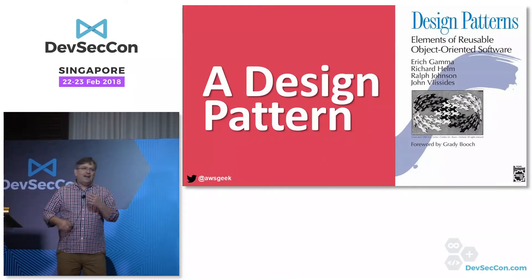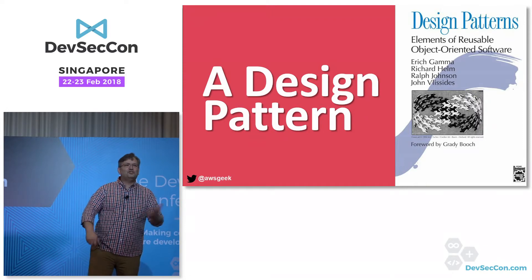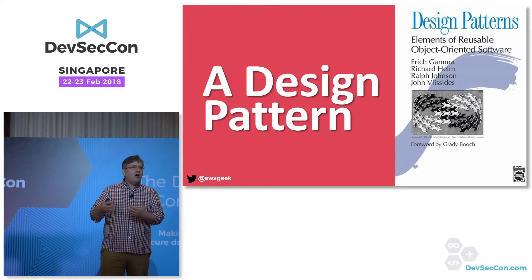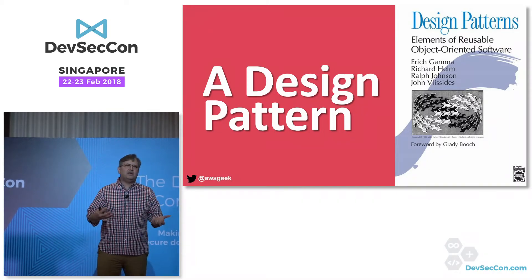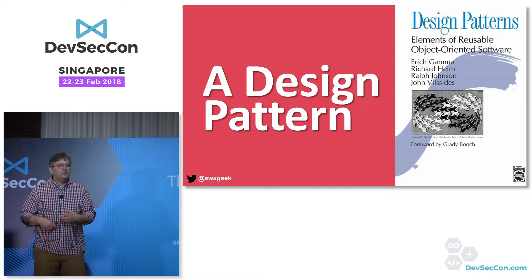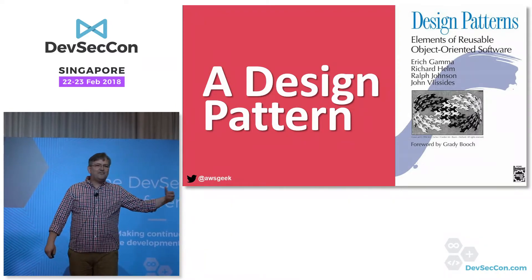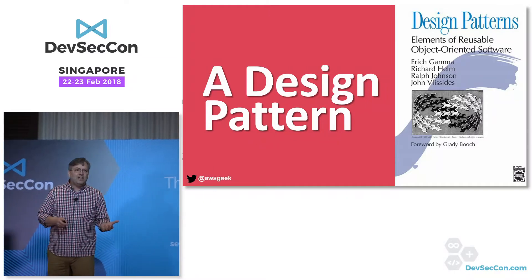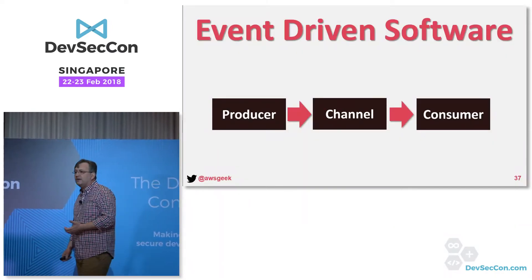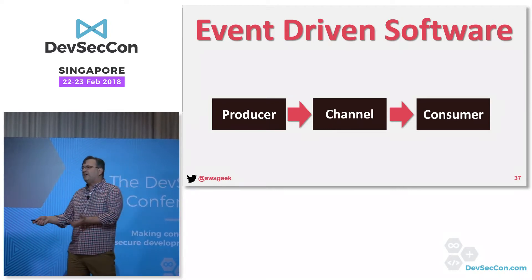How many of you remember the Gang of Four and design patterns? Mid-90s. Design patterns in software development are a way for us to amortize the cost of certain activities or code — they allow us to speak a similar language when talking about specific problems. So if I talk to somebody about a visitor pattern or a facade pattern, if they're familiar with the Gang of Four book, we can talk the same language. Today I'm going to introduce a simple design pattern — event-driven software — in the context of security and adding automation to our environments.